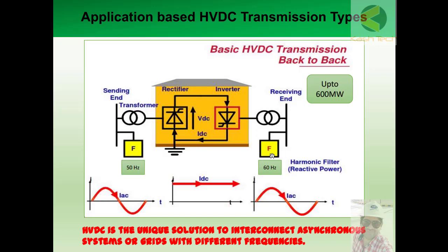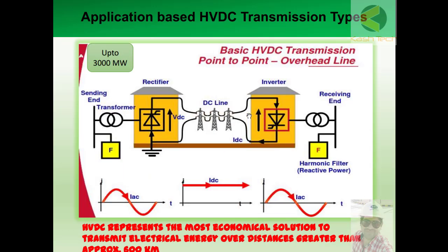This model is applicable when the power to be supplied is more than 600 megawatts. This is one of the applications — the DC system provides flexible coupling of two different networks operating at different parameters. Another application of HVDC transmission is its economic advantage over long distances.